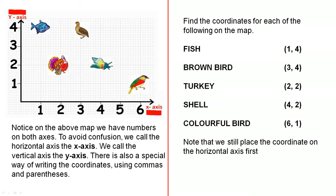Shell. There's the shell. Four, two. (4,2) gives us the shell. And the colorful bird which is this one. Go to the beginning. Six, one. And there we are. Note that we still place the coordinate on the horizontal axis first. So the first one that you see is always the horizontal axis. The second one that you see is the vertical axis.